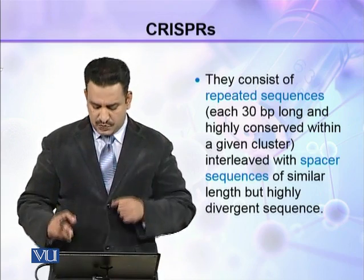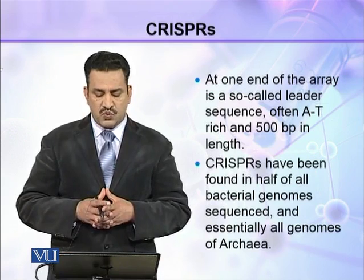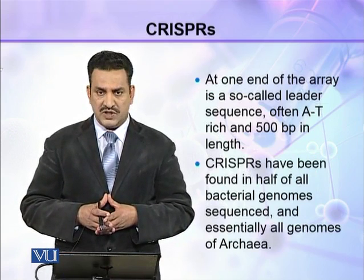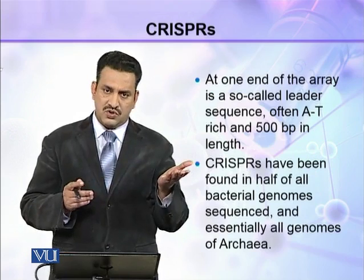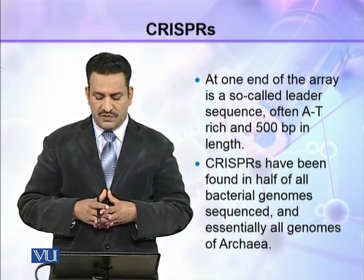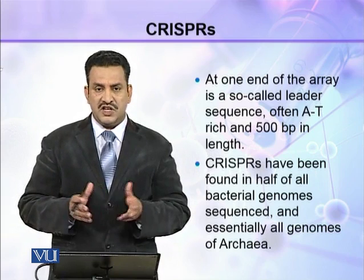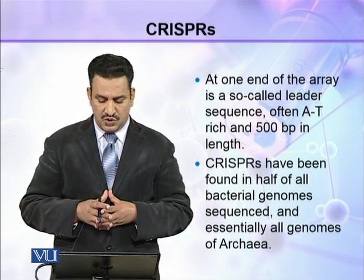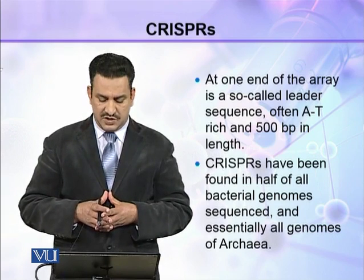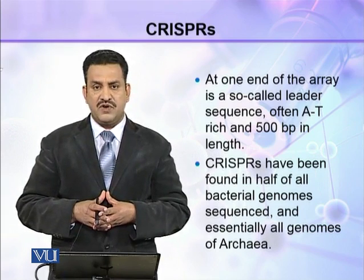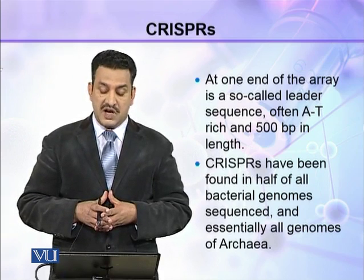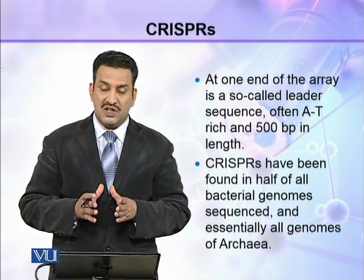At one end of the CRISPR array is a so-called leader sequence, which is often an adenine-thymine rich sequence approximately 500 base pairs in length. CRISPRs have been found in half of all bacterial genomes and almost all genomes of Archaea.